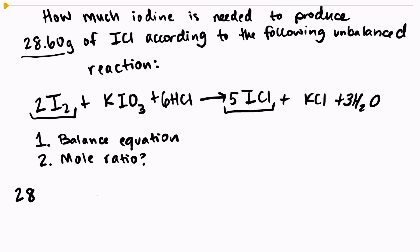So we have 28.60 grams of ICL, and we want to know how much iodine we would need to produce this much iodine chloride.